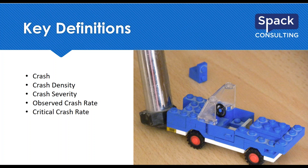Next we have the critical crash rate. This is a statistical threshold for screening locations, and it helps us determine if the observed crash rate is above a statistical range that we expect to occur. When an observed crash rate exceeds the critical crash rate, it does indicate that there's a safety concern at the intersection or corridor, and that further analysis should be pursued to figure out what is truly causing the issue and to address it going forward.